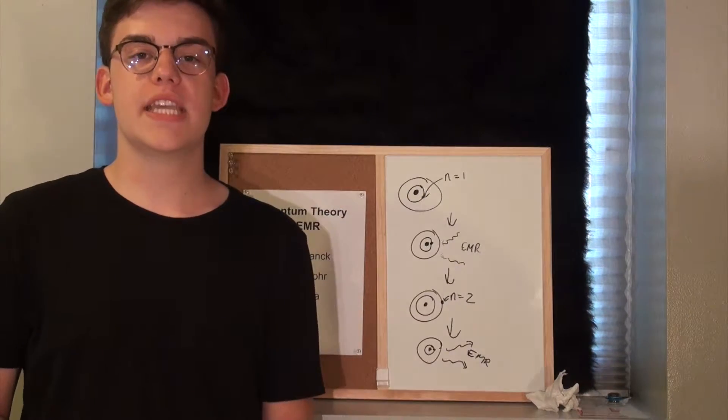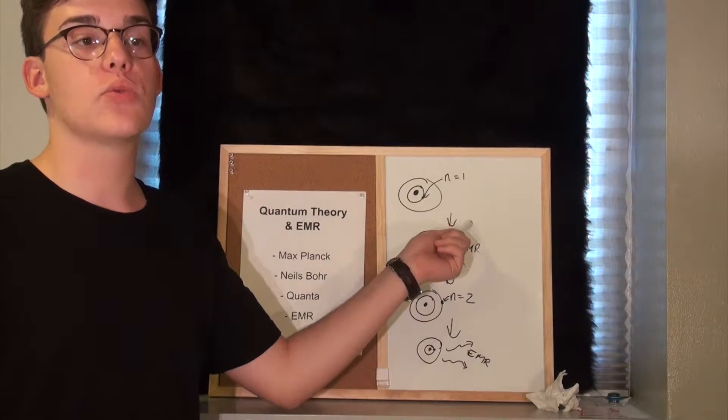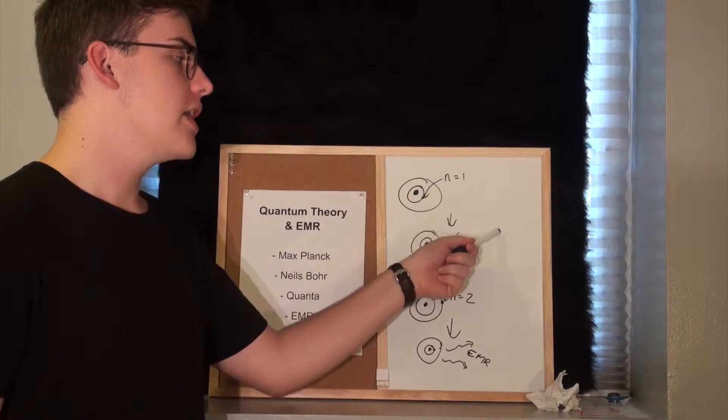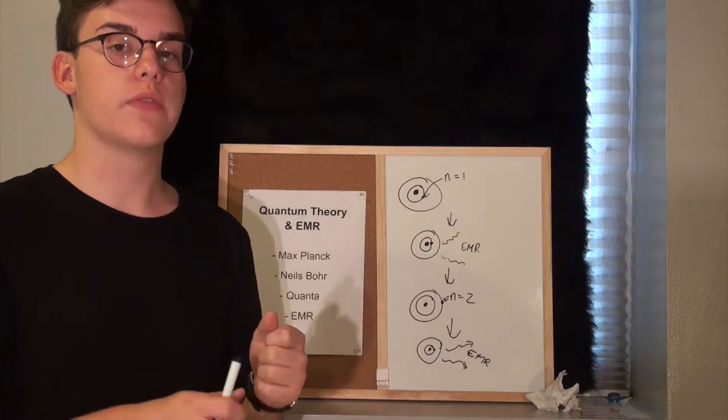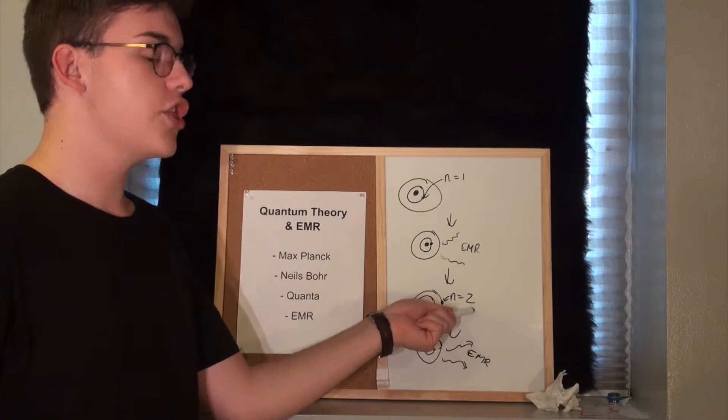So, as you can see in this diagram, you have an atom in the N equals 1 principal energy level. In the second illustration, you can see the atom absorbing electromagnetic radiation.